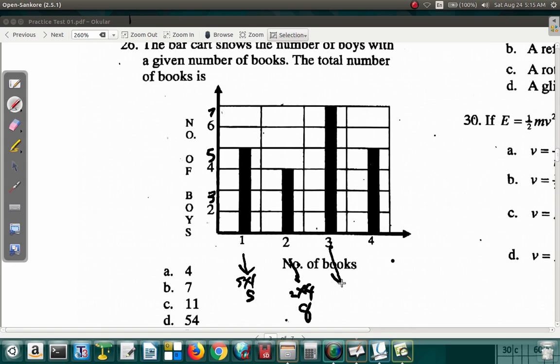This is saying that 7 boys had 3 books each. So it's 7 times 3, which will be 21. And this is saying 5 boys had 4 books each in their bag. So it's 5 by 4, 20.